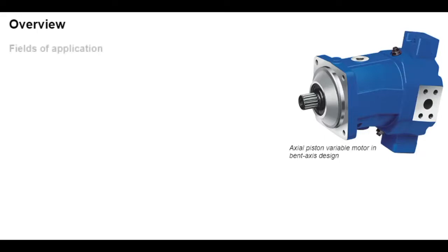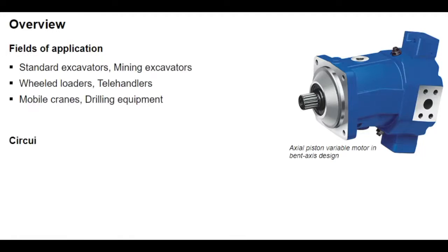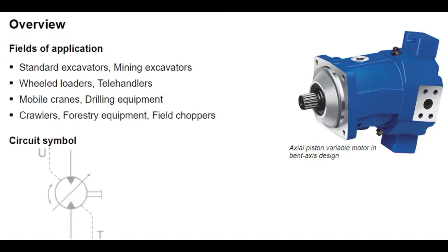Other typical applications include telehandlers, mobile cranes, drilling equipment, crawlers, forestry equipment, and field choppers. The circuit symbol for this kind of motor is the symbol for a reversible variable motor with a drain port and flushing port (U).